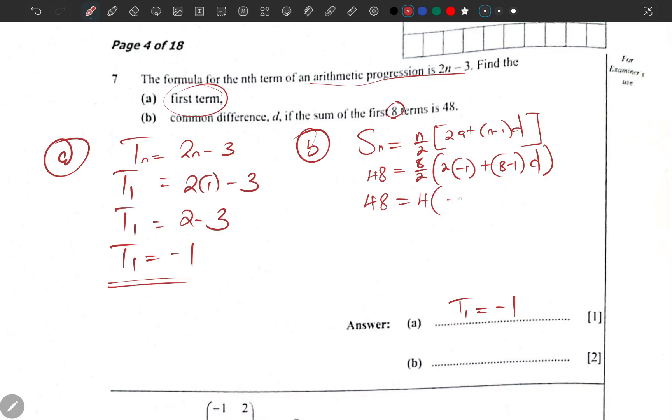48 = 4(-2 + 7d). We can expand: -8 + 28d = 48. This becomes positive 8, so 8 + 48 = 56, which is equal to 28d. Divide by 28, and our d is 2. Put there d = 2.